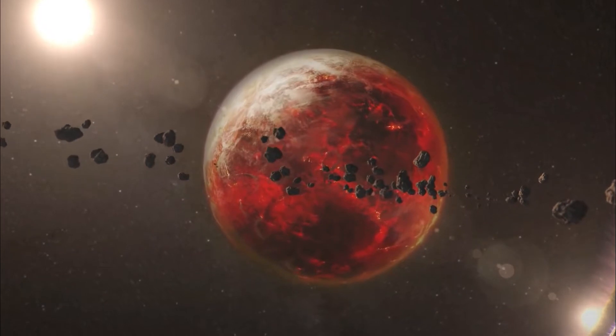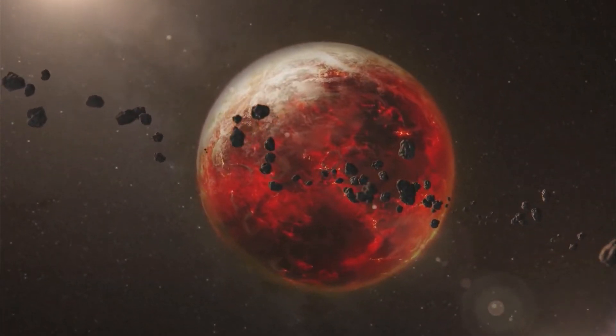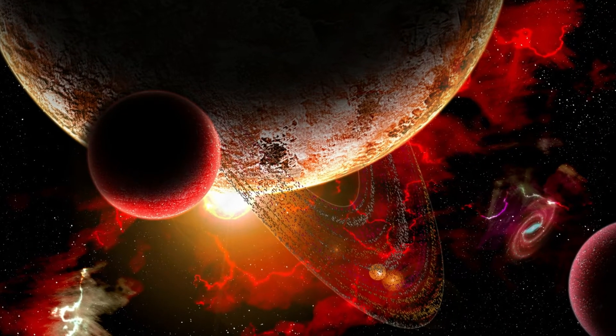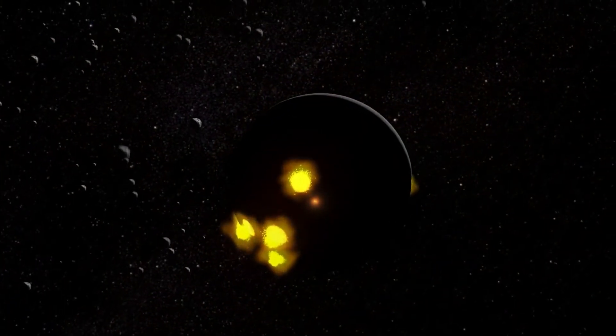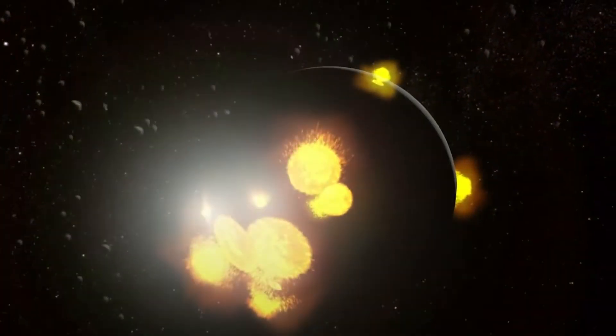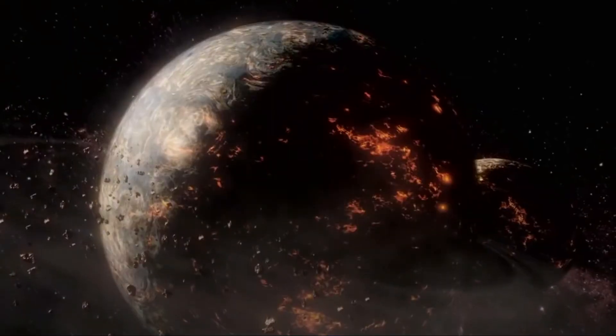Extrasolar gas planets are likely to have some rings for the same reason that solar gas planets do. Their Roche limit is pretty far away from the surface, giving a large region for satellites to fall into and break up, forming the rings.